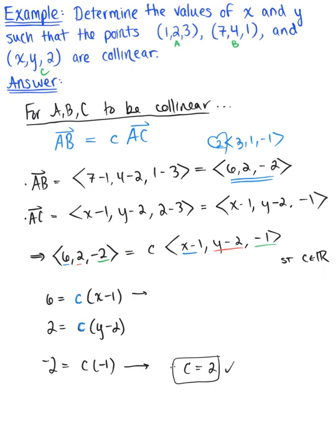So plugging this into our first equation, we have 6 is equal to 2 times x minus 1. Dividing both sides by 2, we have 3 is equal to x minus 1. Adding 1 to both sides, we are left with x is 4.